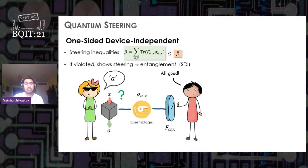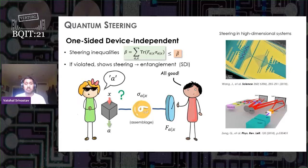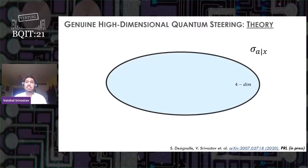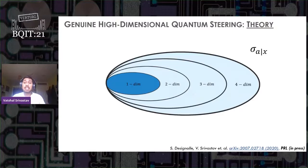Here are some experiments that demonstrated EPR steering in three or four dimensional systems. However, these theoretical steering tests so far can only witness the presence of entanglement without capturing its high dimensional nature. Let me highlight this problem in my next slide. Here is a set of all the assemblages that are four dimensional. This set also contains assemblages that are lower dim, where one dim set contains all unsteerable assemblages.